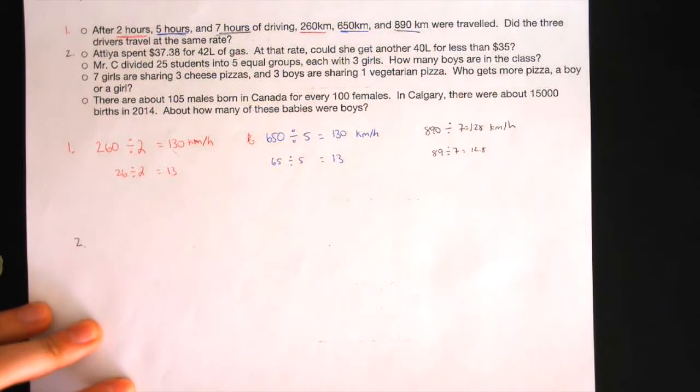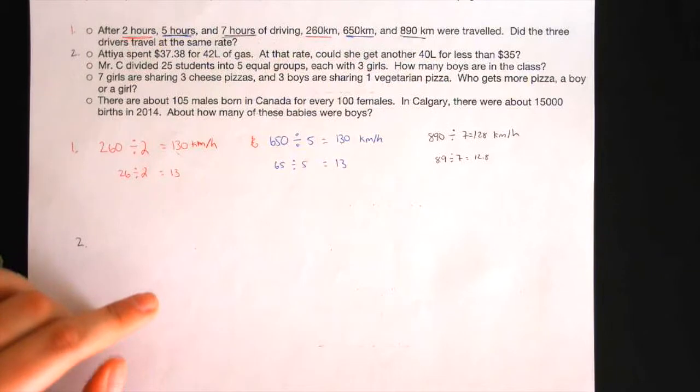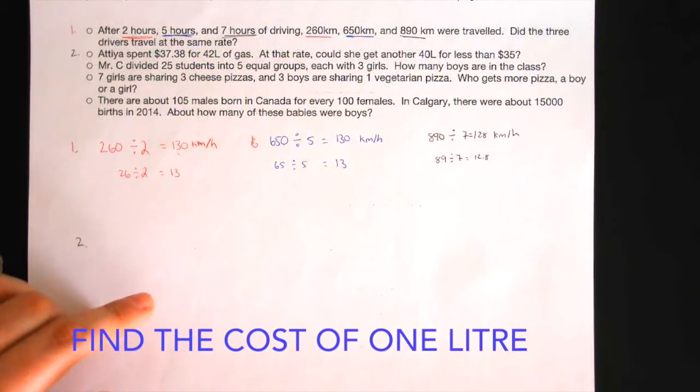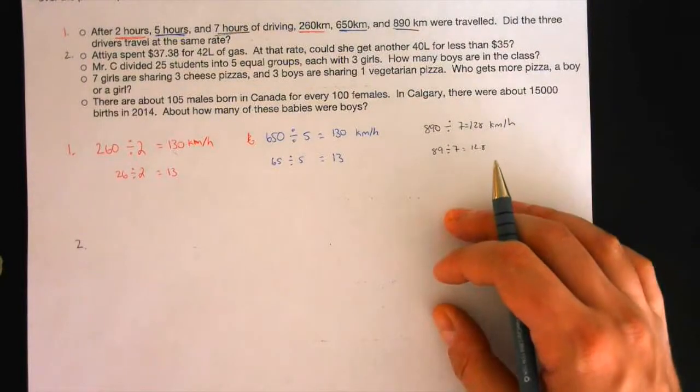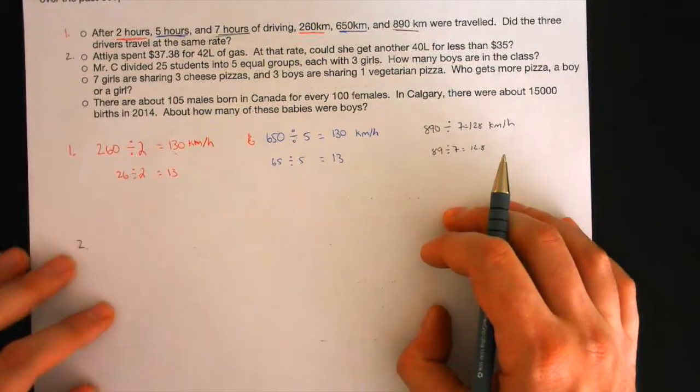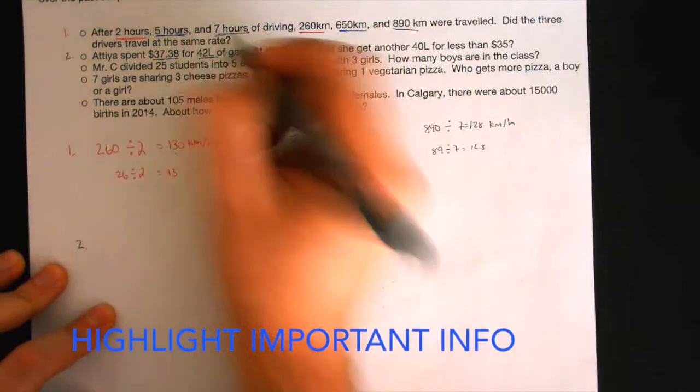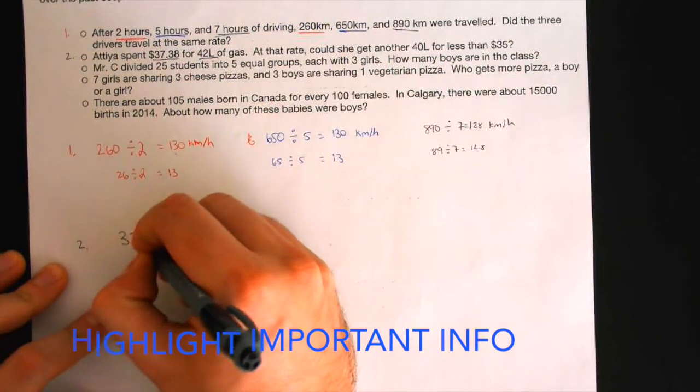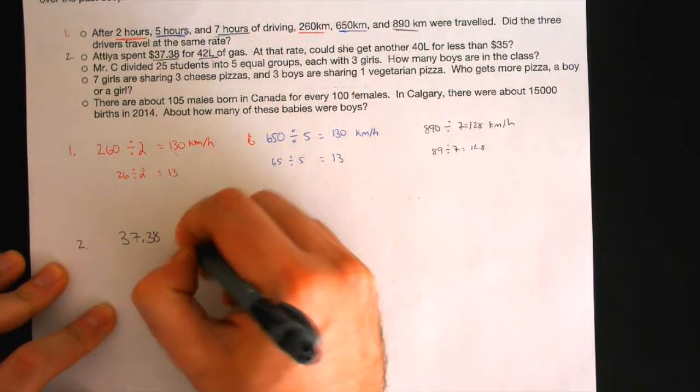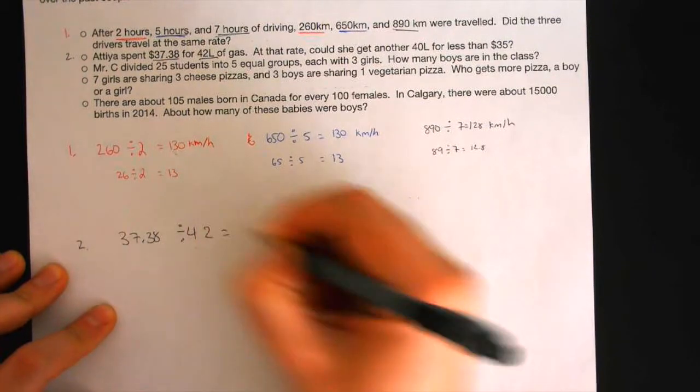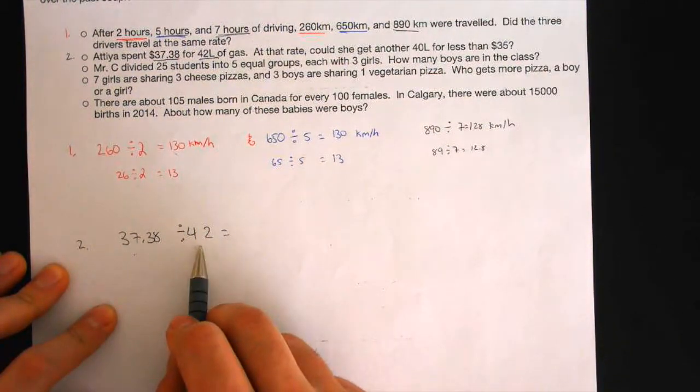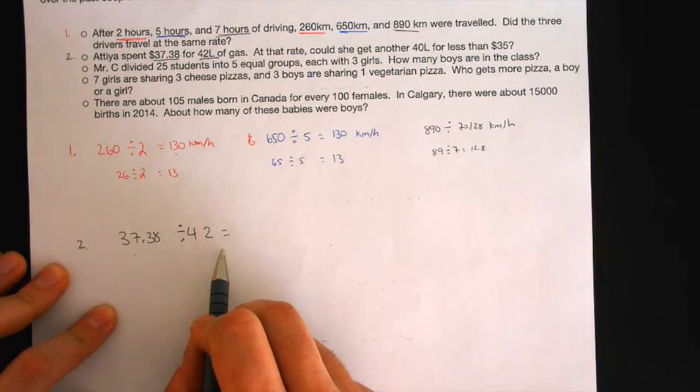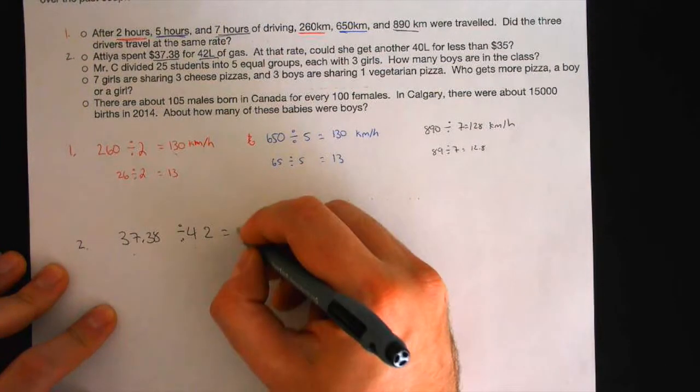So let's find out how much 1 liter costs. What do I have to do to solve how much 1 liter is? Mahir in the back. Hold on. Let me say that one more time. You have to do 37.38 and divide by 42. Okay. And then you get 0.89. 0.89.